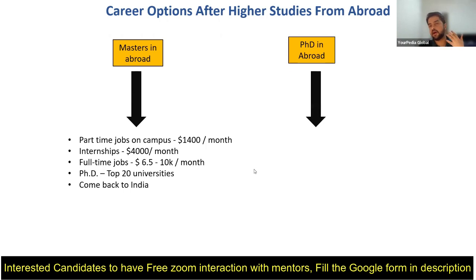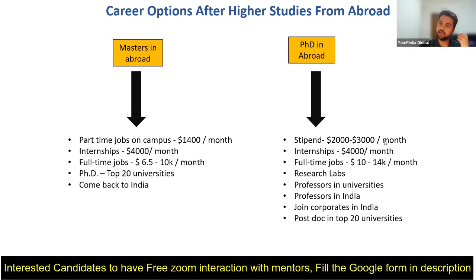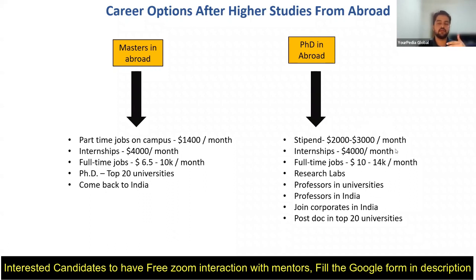Now talking about PhD: in a PhD program, you don't have to do any part-time jobs. You will get a monthly stipend and there is no tuition fee. The monthly stipend is around $2000 to $3000 per month — it depends on your university. The most common stipend is $2000, but some universities like mine give $3000 per month.